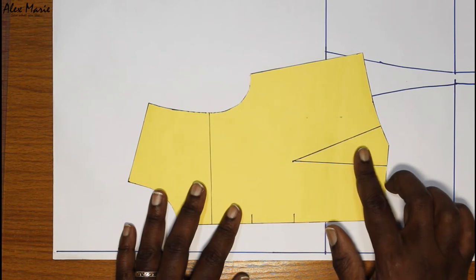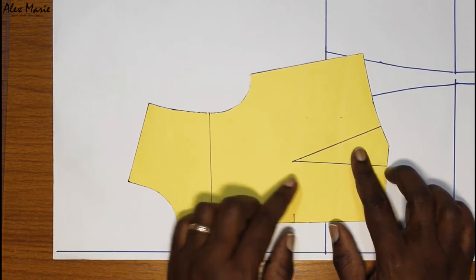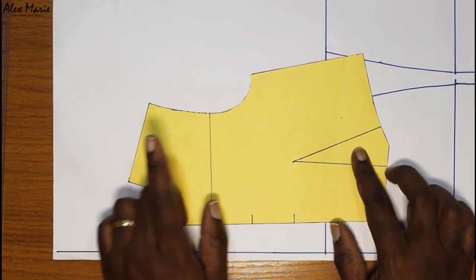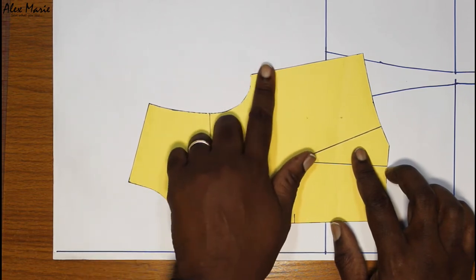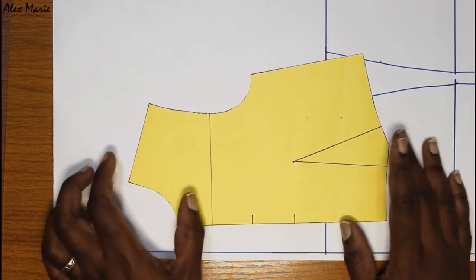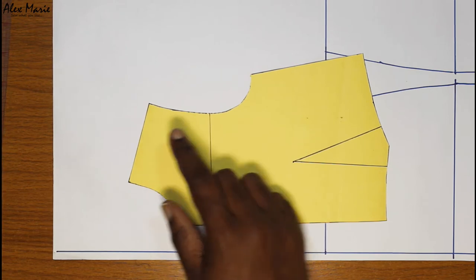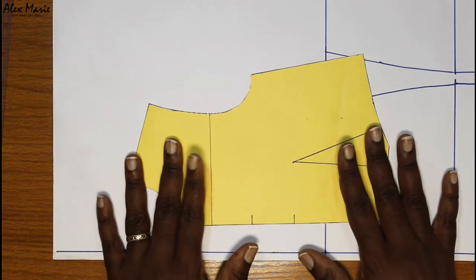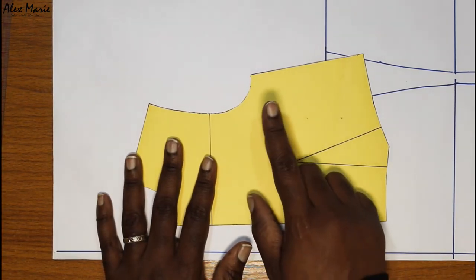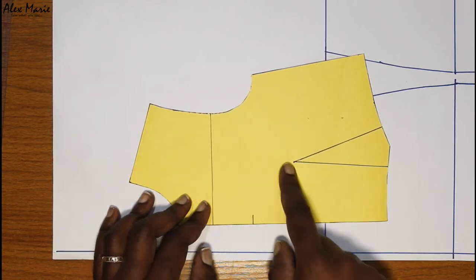Now you're going to trace the front. Now this dart is very big. We're going to share some of this dart somewhere else, maybe the armhole, the shoulder, the side, anywhere that's convenient. And I'm going to do the shoulder because previously we've drafted a torso block and we put the dart on the side. So let's try and do one on the shoulder.